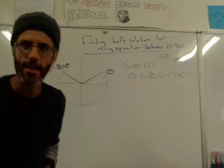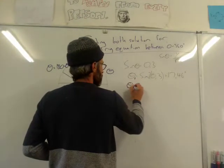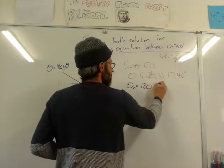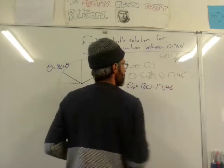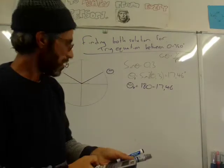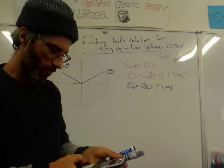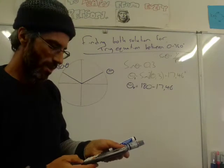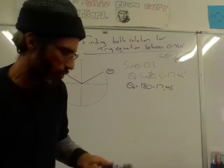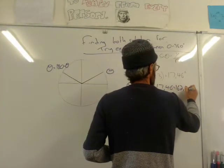So the second solution is going to be 180 minus 17.46. I'm going to do 180 minus 17.46, and I get 162.54. That's your second solution: 162.54.